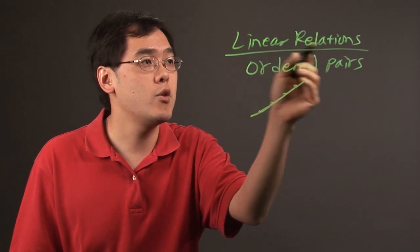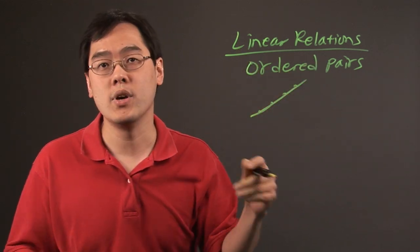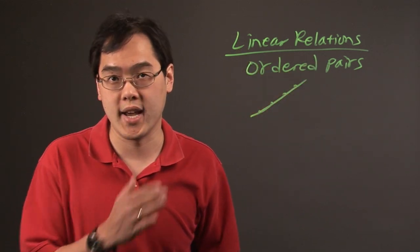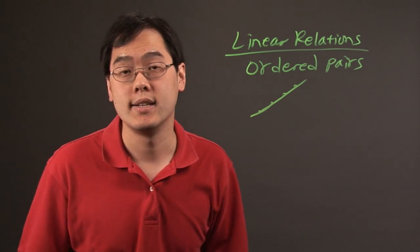So it's ordered pairs - a linear relation is ordered pairs that will give you a line as a result, kind of literally a perfect lineup.